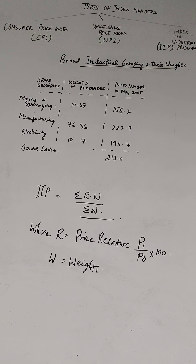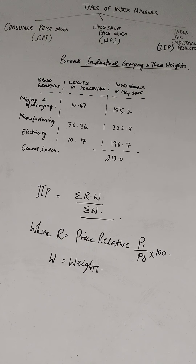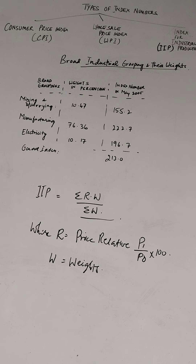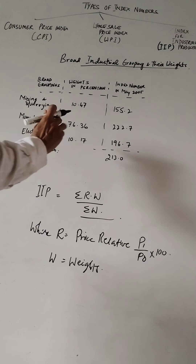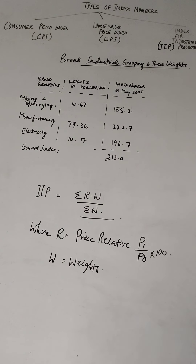A quick revision of the steps: first, classification of industries — basically three: mining, manufacturing, electricity. Then collect data — the data of industrial production are collected year-wise, half-yearly, quarterly, or monthly. Then weights are given according to their relative importance. In India the weights are more or less given — for example, 10.47, 79.36, and 10.17, which we round off to 10, 80, and 10 for easy calculation.